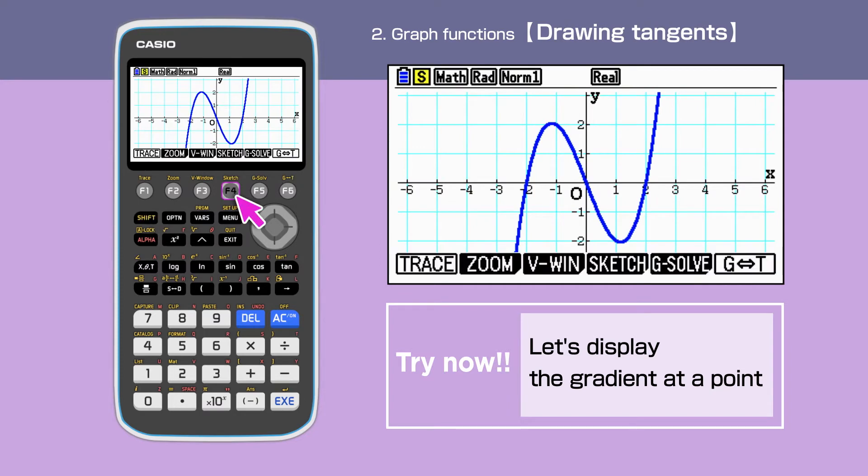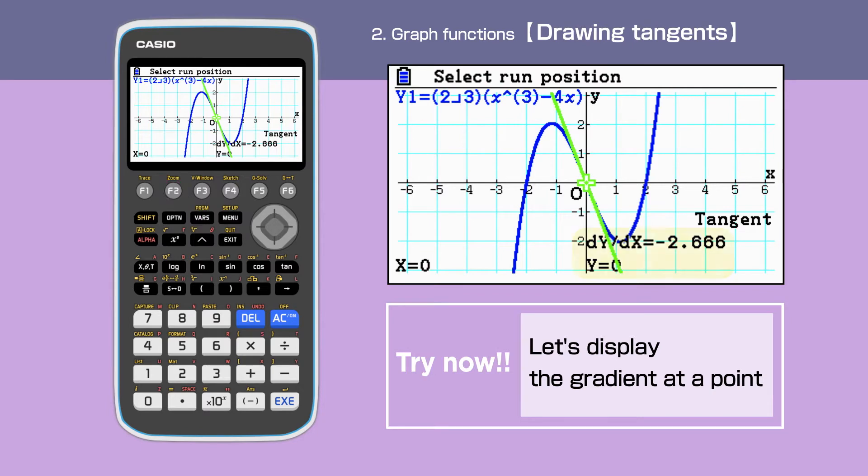Exit the setup and draw the graph again. Press Shift, F4, then F2. This time, we have dy by dx on the same screen.